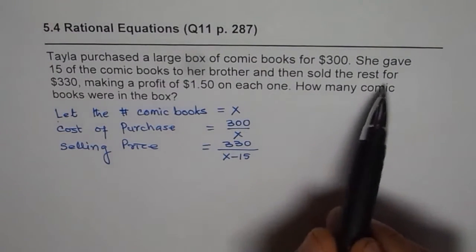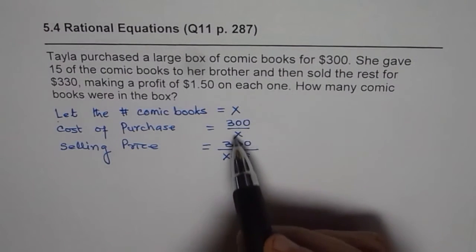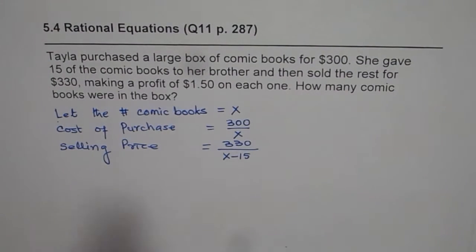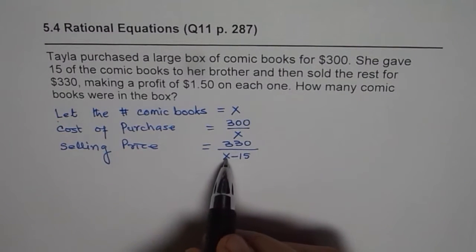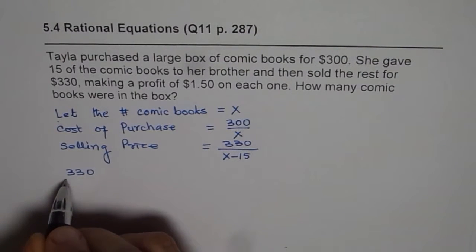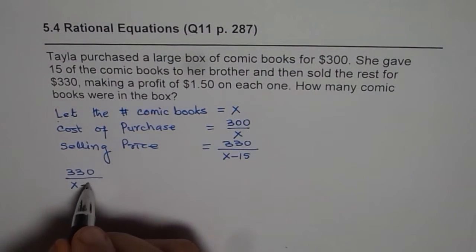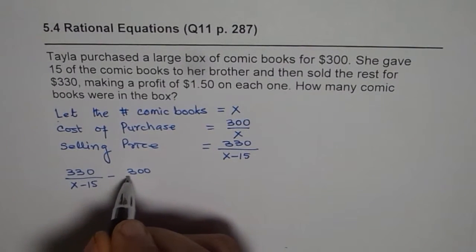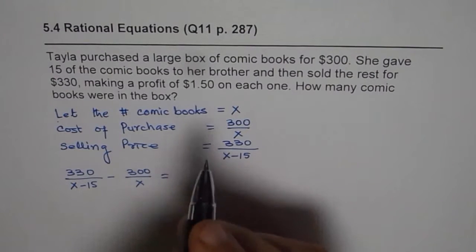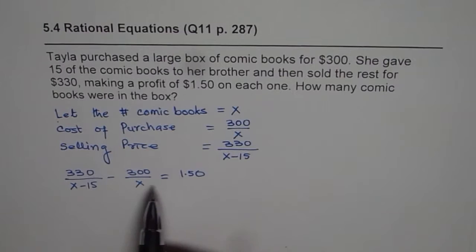Now the question is making a profit of $1.50 on each one. So the difference in these prices or the rates is $1.50. That is how we get our equation. So selling price is always higher. I have seen students writing this equation in the reverse order. So selling price is higher since you are dividing by a lower number. So 330/(x-15) minus 300/x equals $1.50. So that is the difference in selling price and the cost price and therefore this is your profit. So profit is difference between selling and cost price.